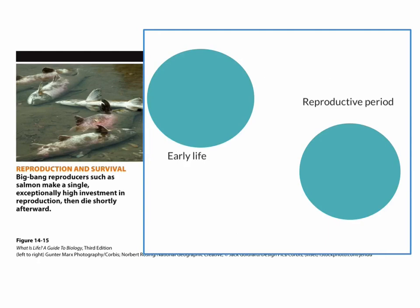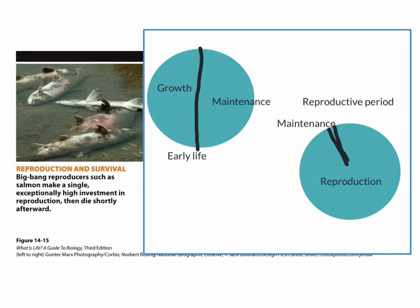Big Bang reproducers have two major phases during their lifetimes. During their early life, they split their energy between growth and maintenance. Later in life, they move into a reproductive period — they spend a small amount of energy maintaining themselves just long enough to get to a nesting ground, then spend all of their energy on reproduction. Because these organisms have spent so little energy maintaining themselves, they end up dying at the end of their reproductive cycle.